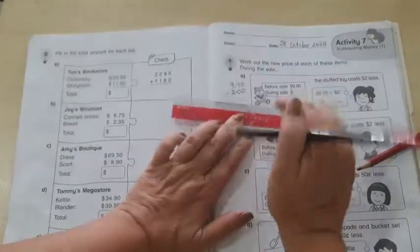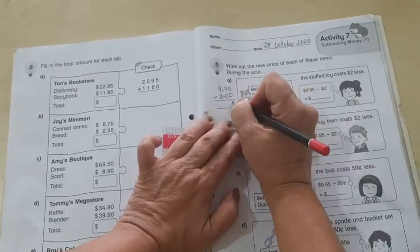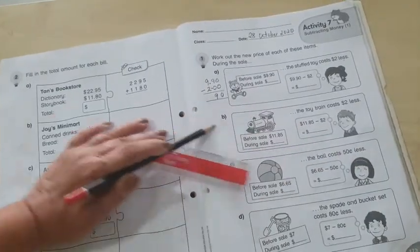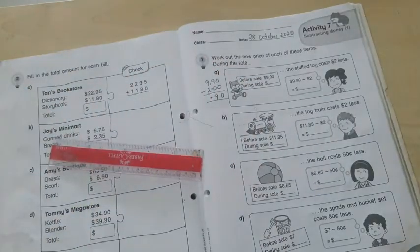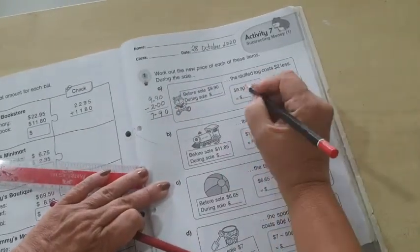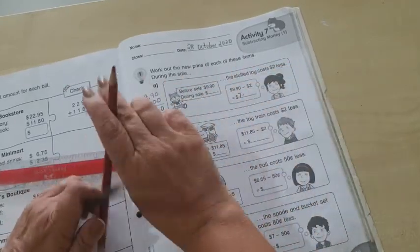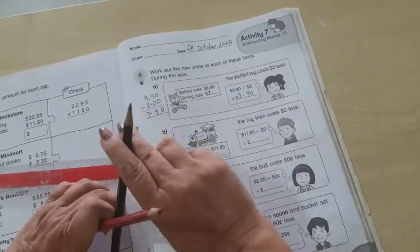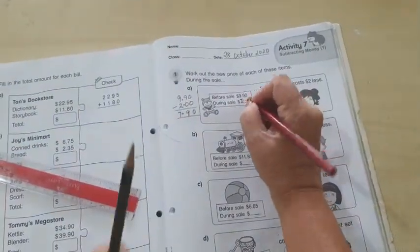you minus, you get 0, 9 decimal point. And, 9 minus 2 is 7. Okay. So, the answer is $7.90. And, you have to write it over here also, $7.90. So, see, I'm writing it even in the small box.